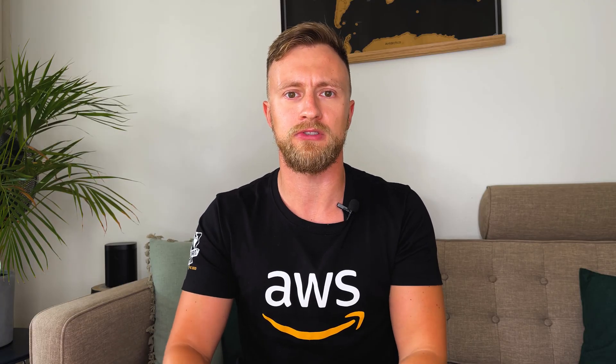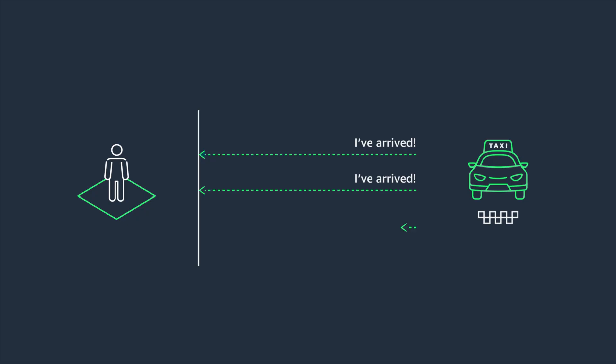But what happens if my consumer service becomes unavailable? My taxi booking service will not be able to reach it and the message will be lost. We could have our taxi booking service simply keep retrying delivery of the message. However, as our taxi service increases in popularity, this service will get very busy simply trying to deliver all these messages. This is not a scalable architecture approach to follow.